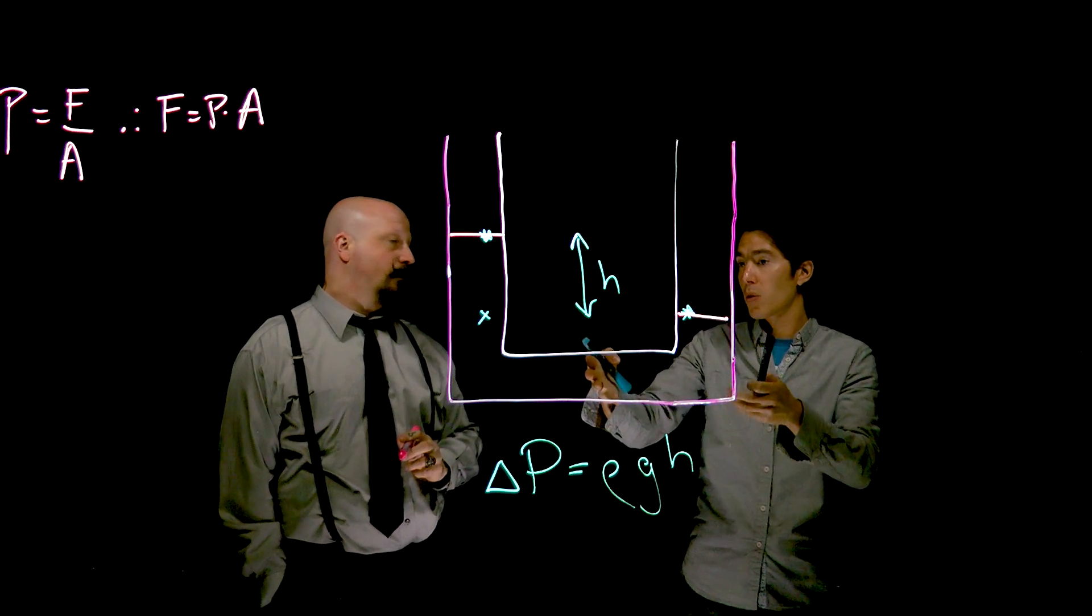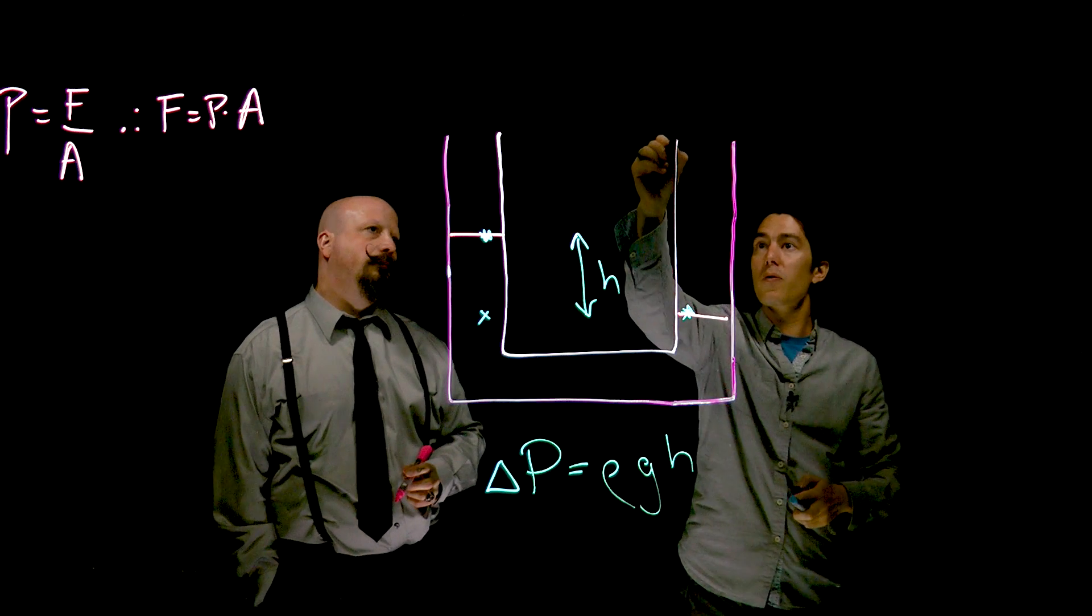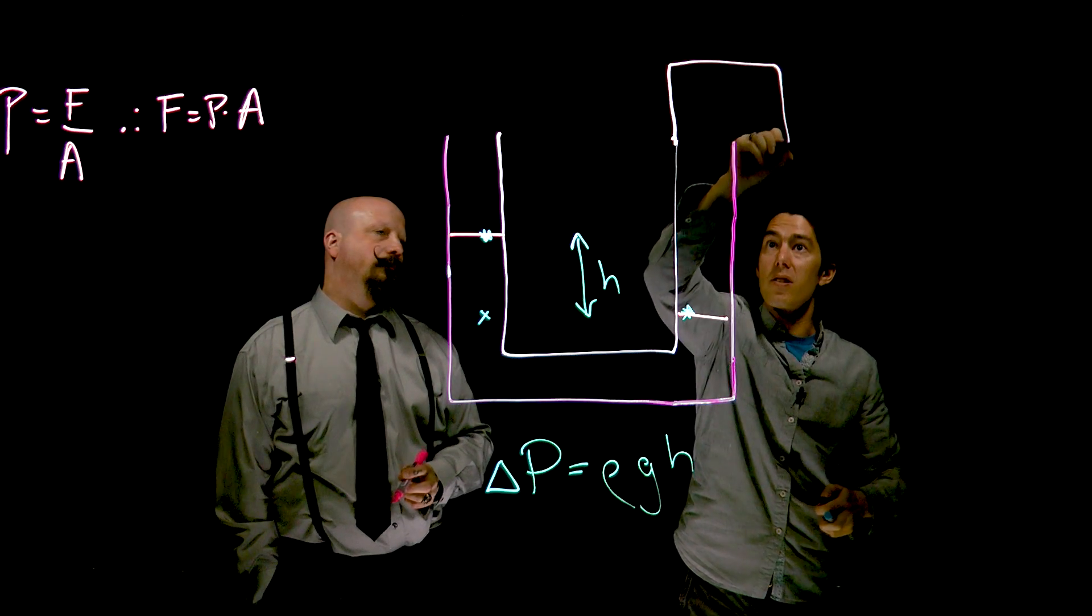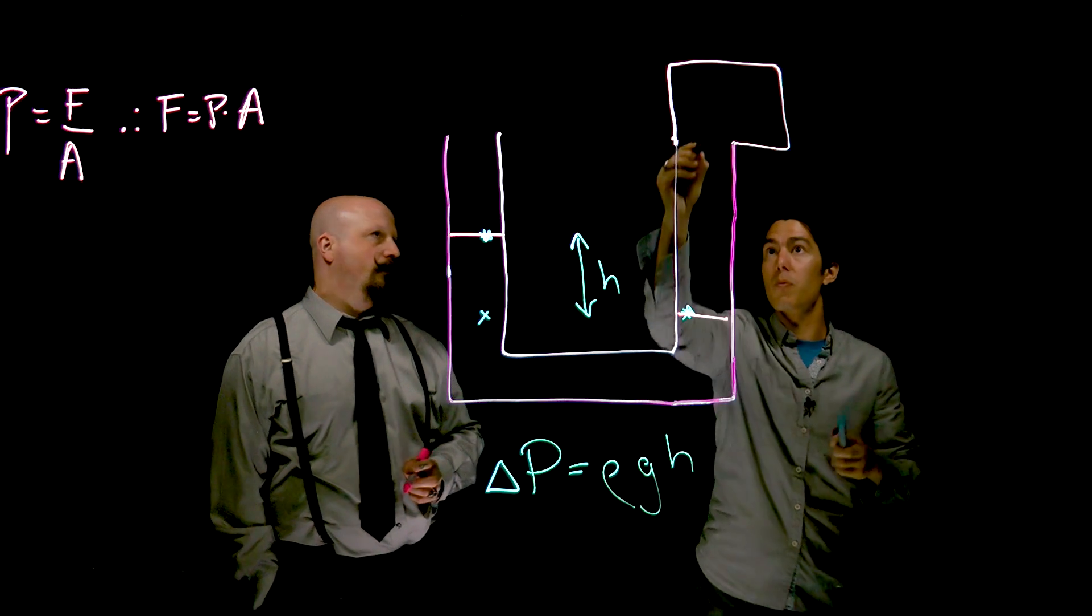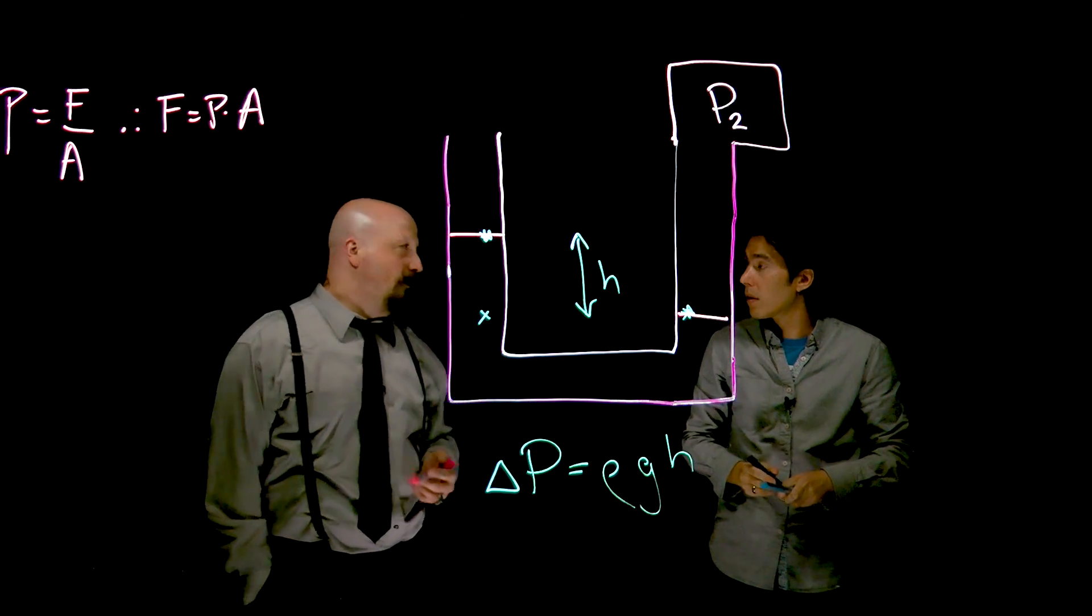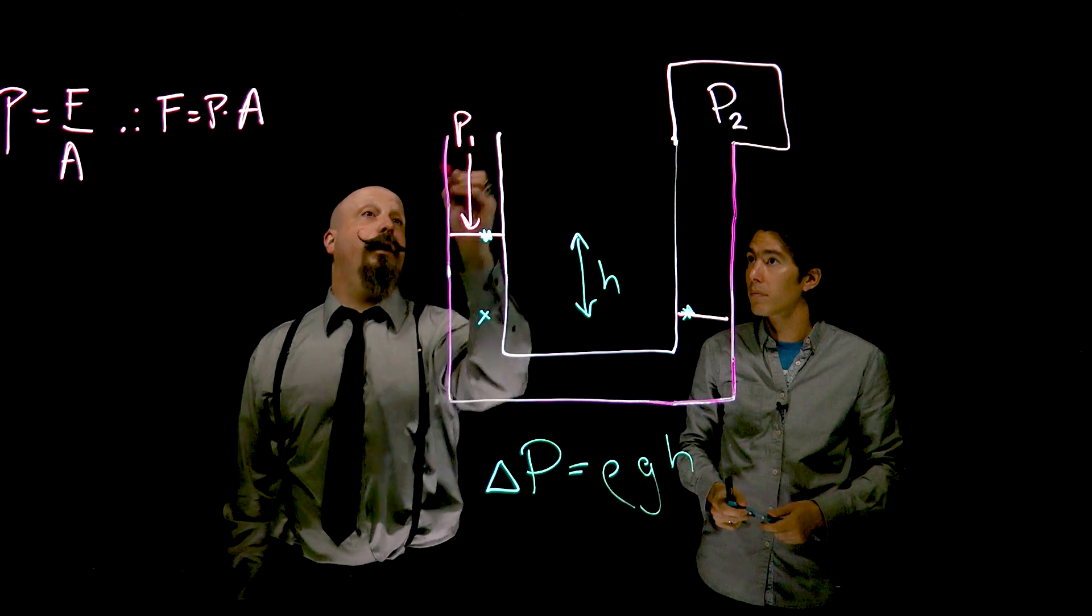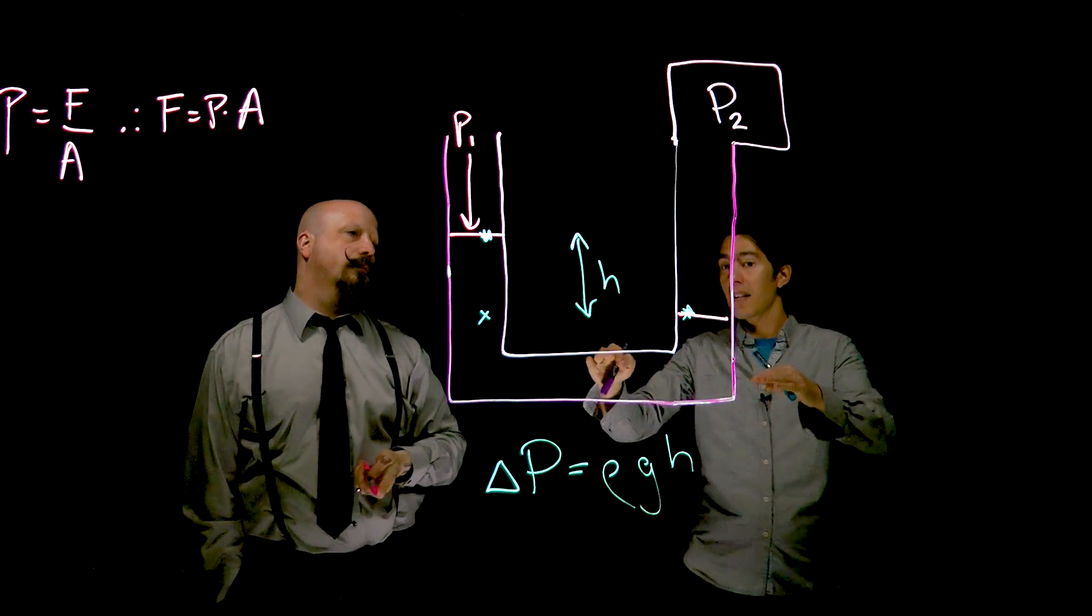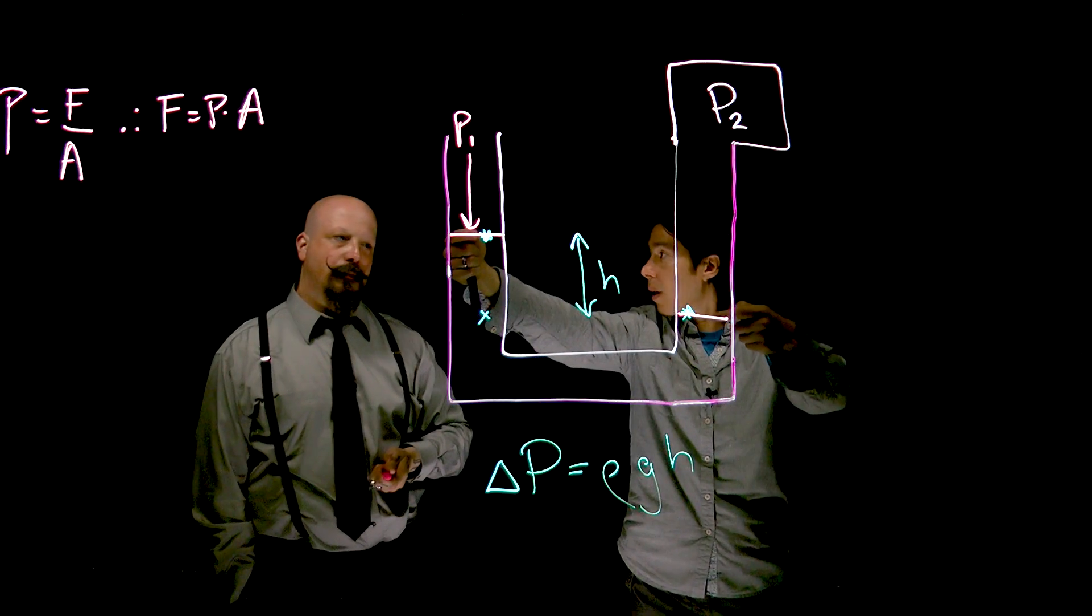But you can get situations where you will get a difference in the water level here. And this becomes useful as a way to actually measure differences in pressure. Say there's a sealed off end here with some gas, with some pressure, let's call that P2 here. And then this will be open maybe just to the atmosphere. Right. So it's only experiencing some pressure, P1.